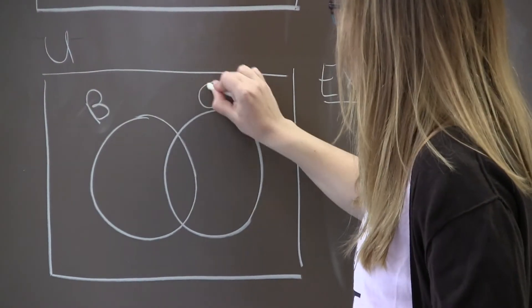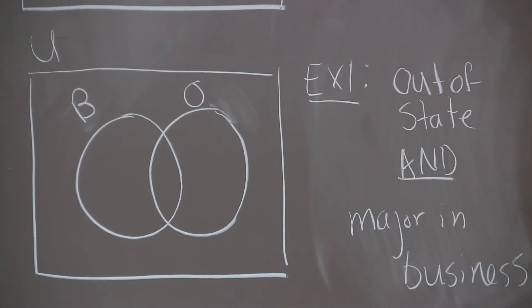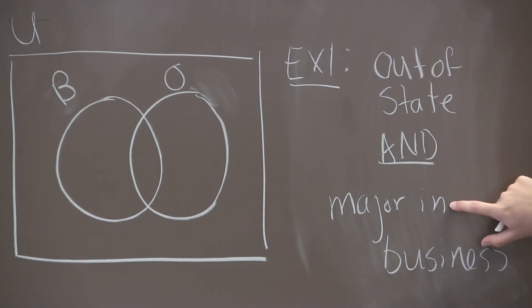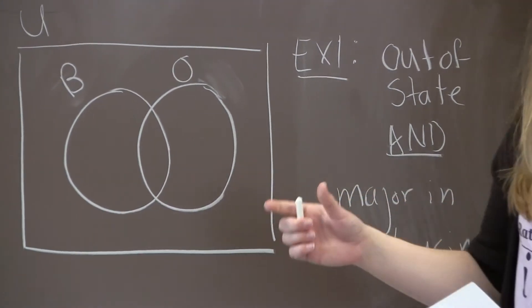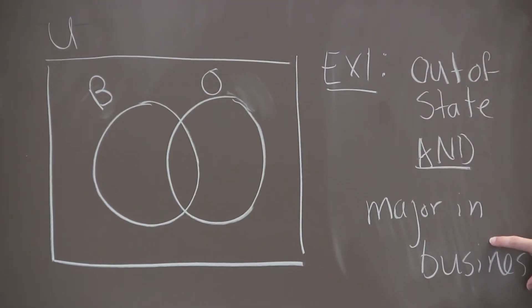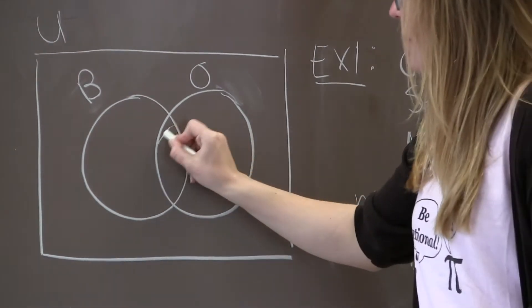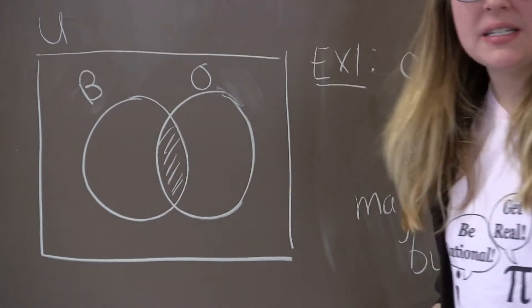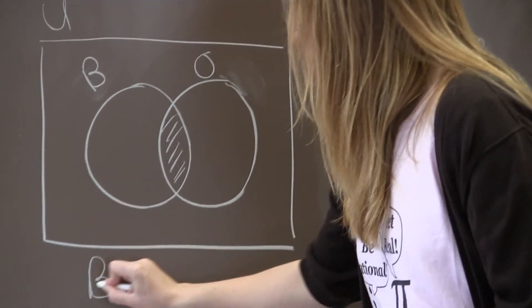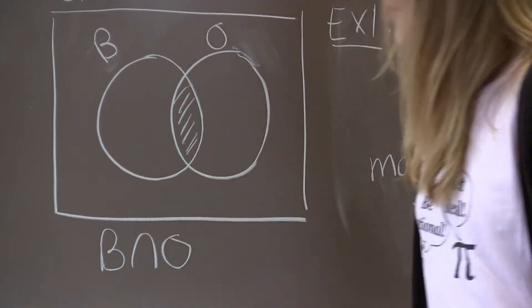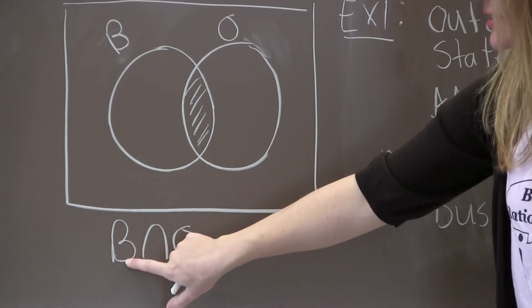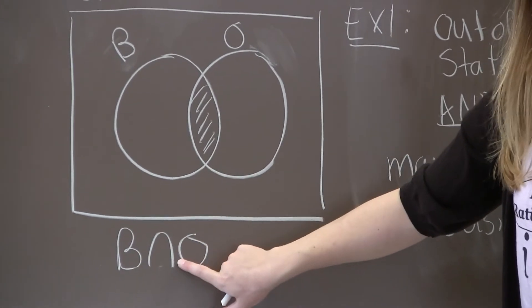And then if we want to find the region or regions that represent the out-of-state students and the students that major in business, that has to be inside of both of those circles because and means you have to satisfy both of these conditions. So that's this region right here. And we call that B intersect O. Remember from last time that intersection just means the word and. They have to live inside of the set B and they have to live inside of the set O.